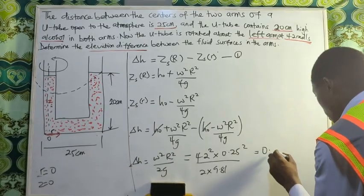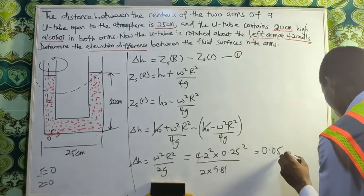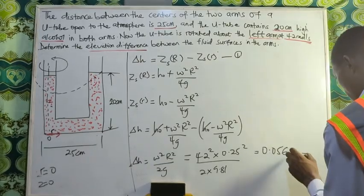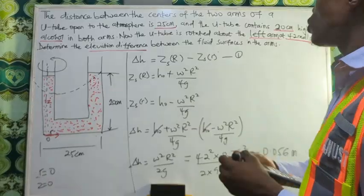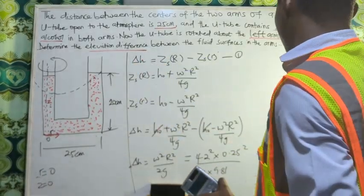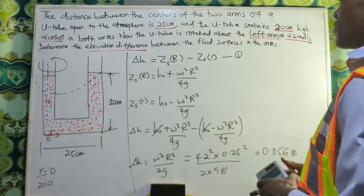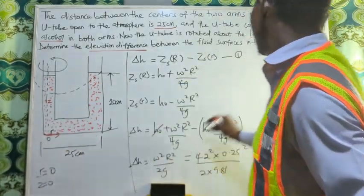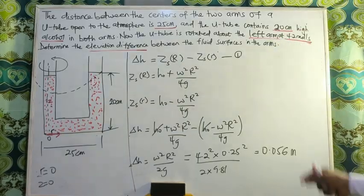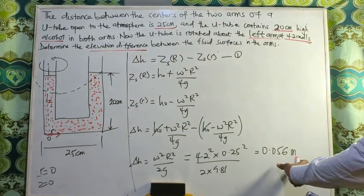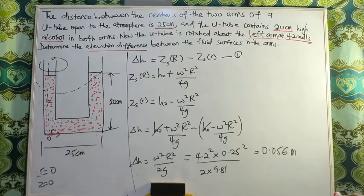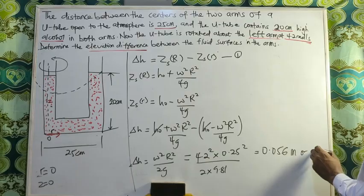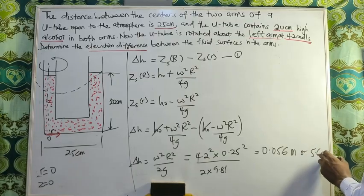We are going to get 0.056 meters. So this is going to be the elevation difference between the two surfaces when it's being rotated about the z-axis at a speed of 4.2 radians per second. This is the elevation difference, or if you want it in centimeters, it's going to be 5.6 centimeters.